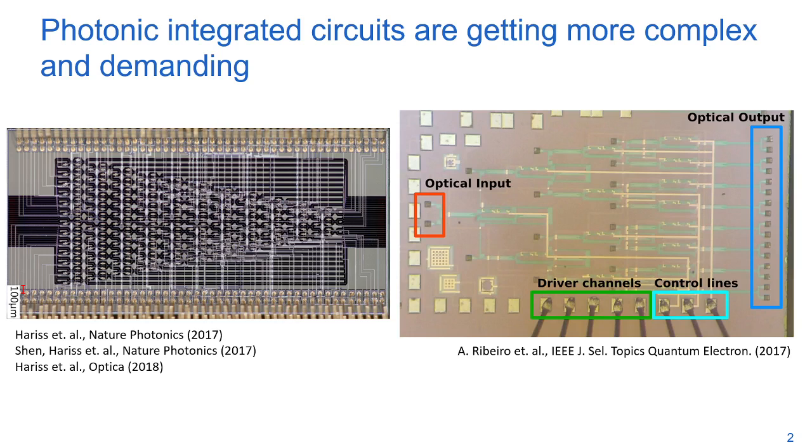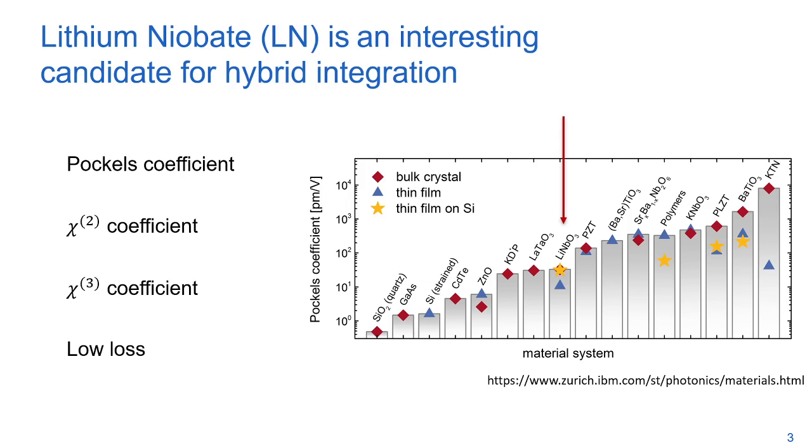Integrated photonic circuits are becoming increasingly complex. Hybrid integration attempts to satisfy stringent requirements by combining the best materials for every component. Lithium niobate is a perfect candidate, providing a high electro-optic coefficient, high second and third order nonlinearities, and extremely low losses.